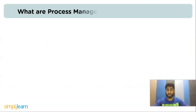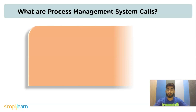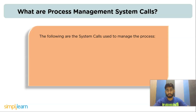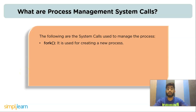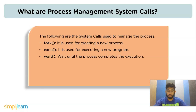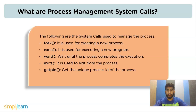The next question is: what are process management system calls? The system calls used to manage processes are: fork() — used for creating a new process; exec() — used for executing a new program; wait() — waits until the process completes execution; exit() — used to exit from the process; getpid() — gets the unique process ID of the process; and getppid() — gets the parent process unique ID.